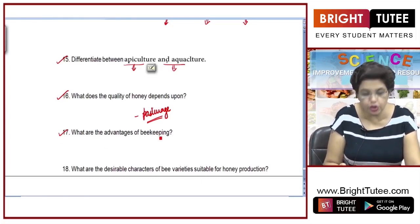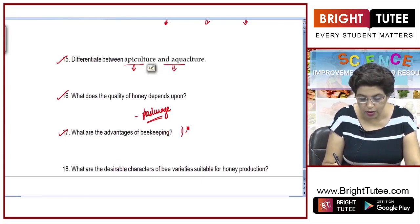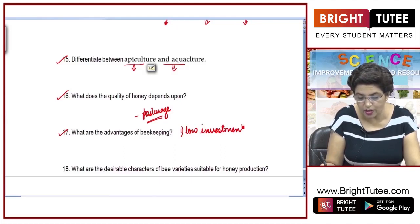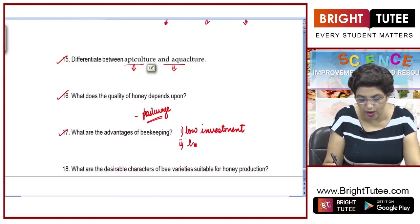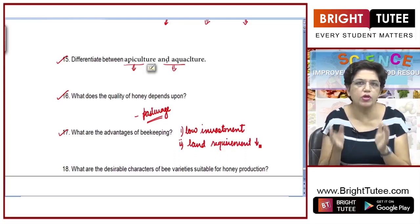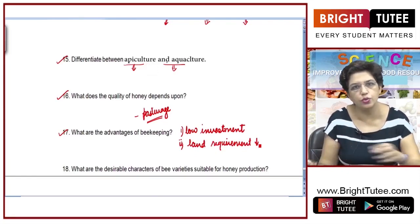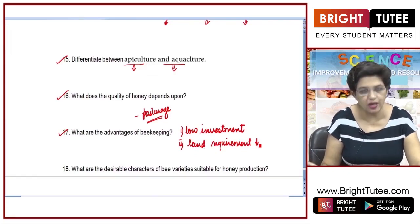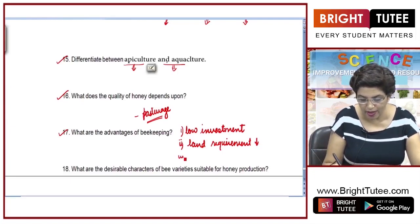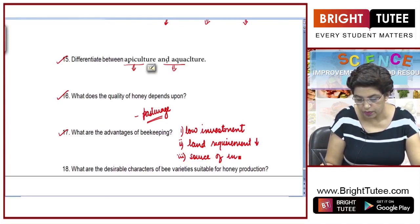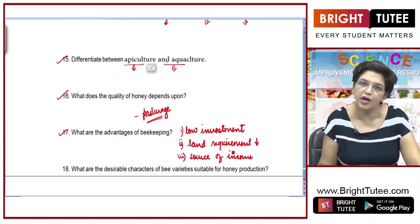Next question: what are the advantages of beekeeping? First, it requires very low investment, so even small farmers can do it. Second, there is no land requirement — even a small farmer with a small piece of land can use it for apiculture alongside growing crops. So it provides an extra source of income for farmers apart from farming.